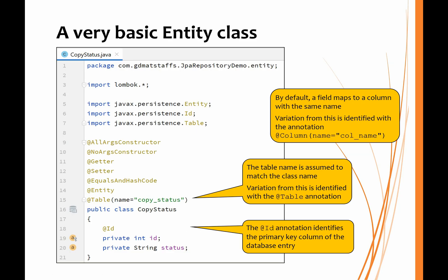Let's take a look at this very basic Entity class. I'm using Lombok annotations, so that really makes the class much simpler to read. We'll have an all-args constructor for our own purposes within the application. Here's the no-args constructor for JPA's purposes. Getters and setters for all the attributes. I'm also providing an equals and hash code method. There's the annotation that makes this class a JPA entity, and there's the full path name of that class that we are using for this annotation.